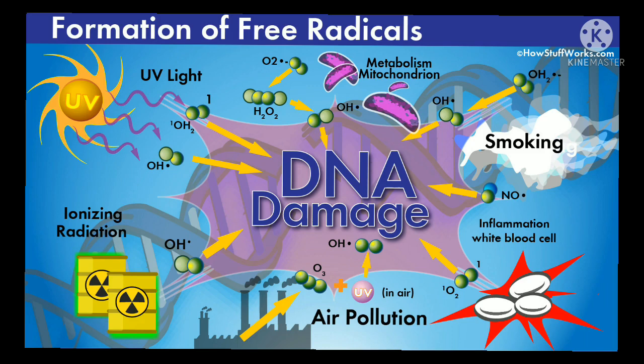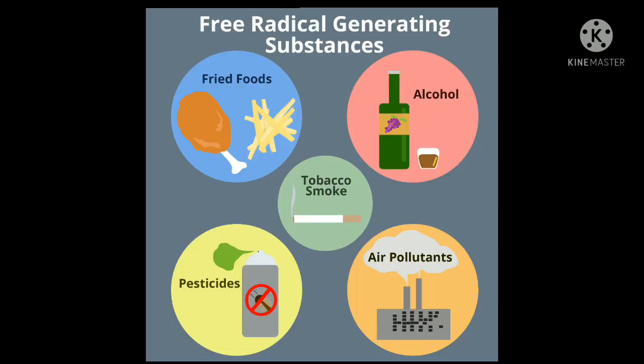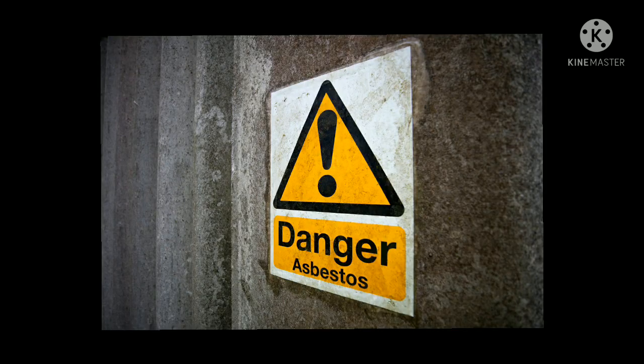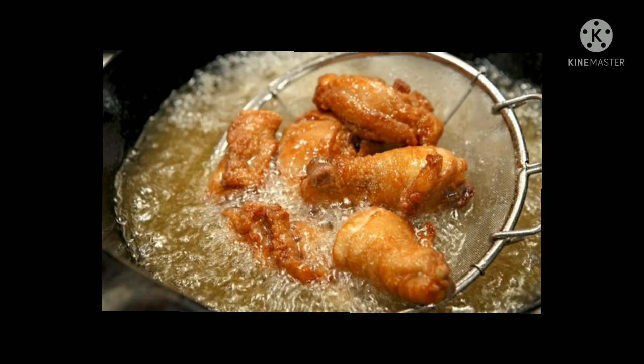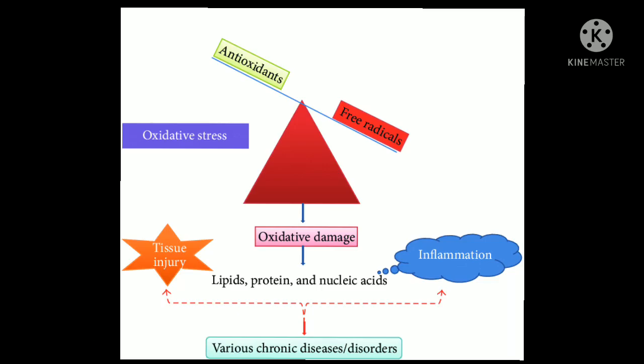Exposure to free radicals in the environment also produces free radicals in the body. Examples include smoke, UV radiation, air pollution, alcohol, environmental and occupational substances and chemicals, such as asbestos and vinyl chloride, and even the fried foods we eat. This availability of free radicals creates oxidative stress, which is an imbalance between production and accumulation of free radicals and our body's ability to neutralize them.